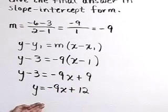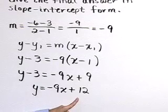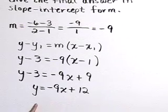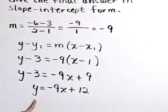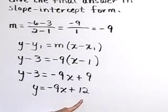The equation of the line in slope-intercept form that goes through the points (2, -6) and (1, 3) is y equals -9x plus 12.